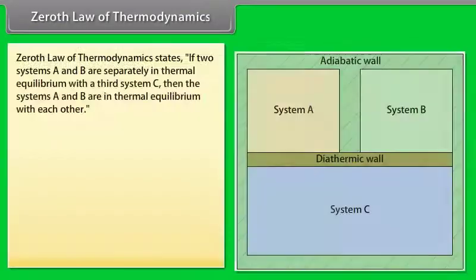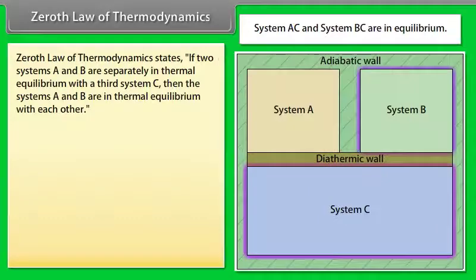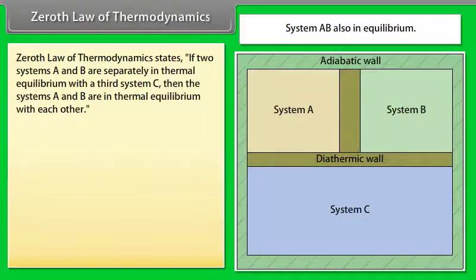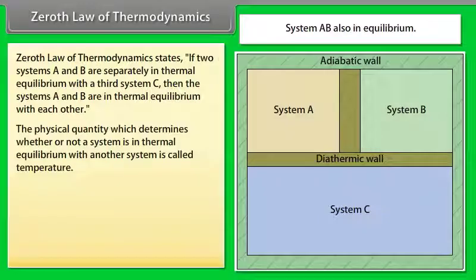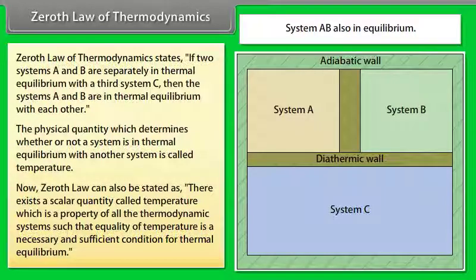Thermal equilibrium is the basis of the zeroth law of thermodynamics. The zeroth law states: if two systems A and B are separately in thermal equilibrium with a third system C, then systems A and B are in thermal equilibrium with each other. The physical quantity that determines whether a system is in thermal equilibrium with another is temperature. Equivalently, there exists a scalar quantity called temperature such that equality of temperature is a necessary and sufficient condition for thermal equilibrium.